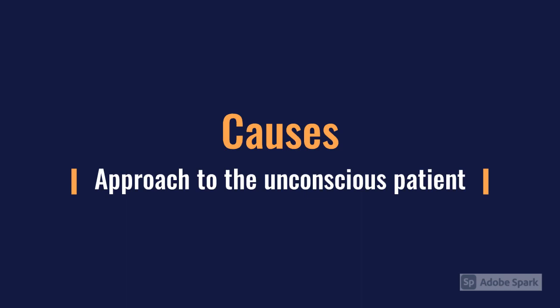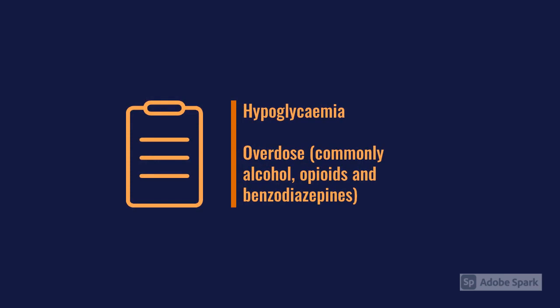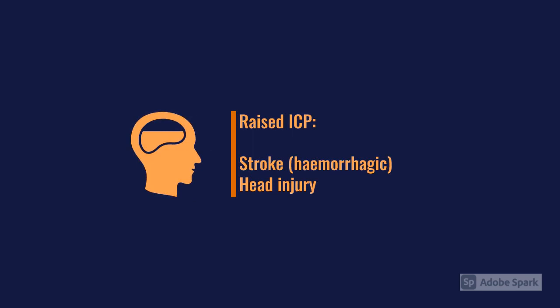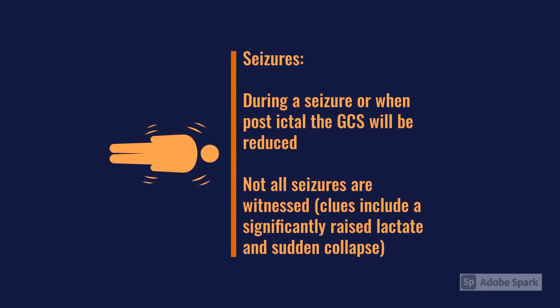Those are the main principles for the A-to-E assessment of the unconscious patient. Keep your differential broad, work through each stage thinking about causes and risks of unconsciousness — especially airway. To finish, the most common causes of low GCS: we've already covered hypoglycaemia and overdose. Raised ICP is another big one — the most common causes I see are stroke, intracerebral haemorrhages, and head injuries. Seizures are also a major cause: during the seizure itself the patient will be unresponsive, GCS 3, and in the post-ictal phase GCS can range from 3 to 14 or 15.